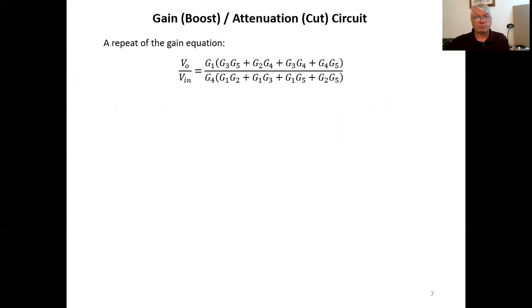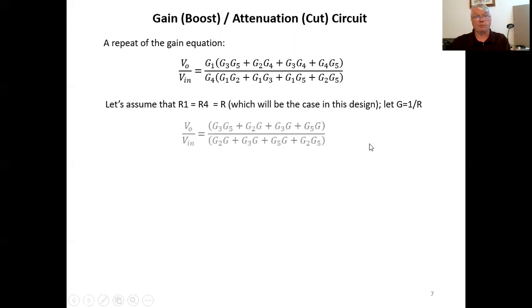Now, let's repeat that gain equation. And let's assume now that r one is r four, which we'll just call that r, which is the case in that design. Remember the input resistor, which was r one in my representation, was a 4.7 K and internal to the op amp was a 4.7 K resistor between the output and the inverting input, which I've designated here as r four. So they're equal, and we'll just call their resistance r and the conductance g one over r. If we make that change, then this becomes the gain relationship of that circuit.